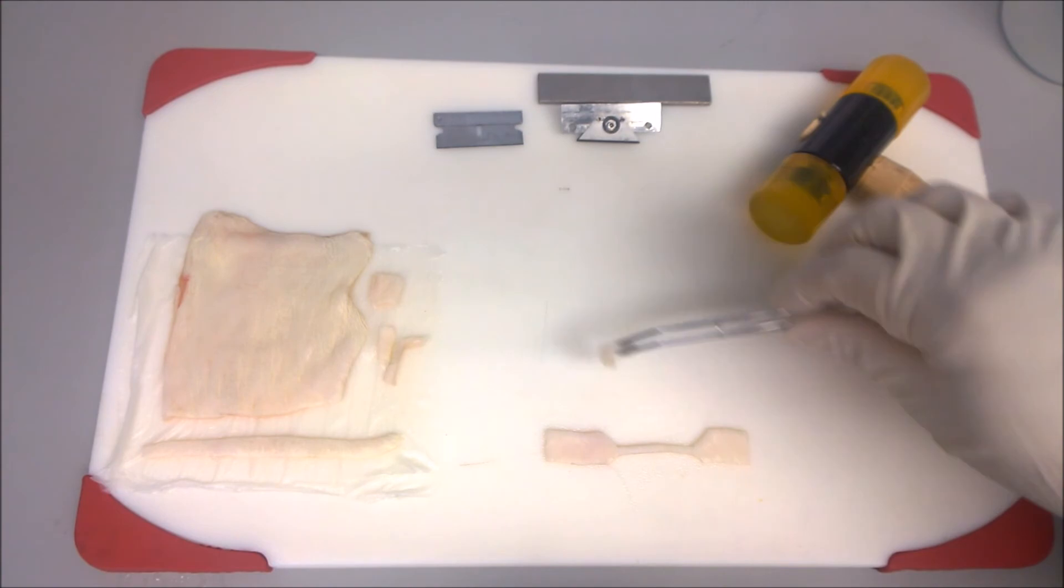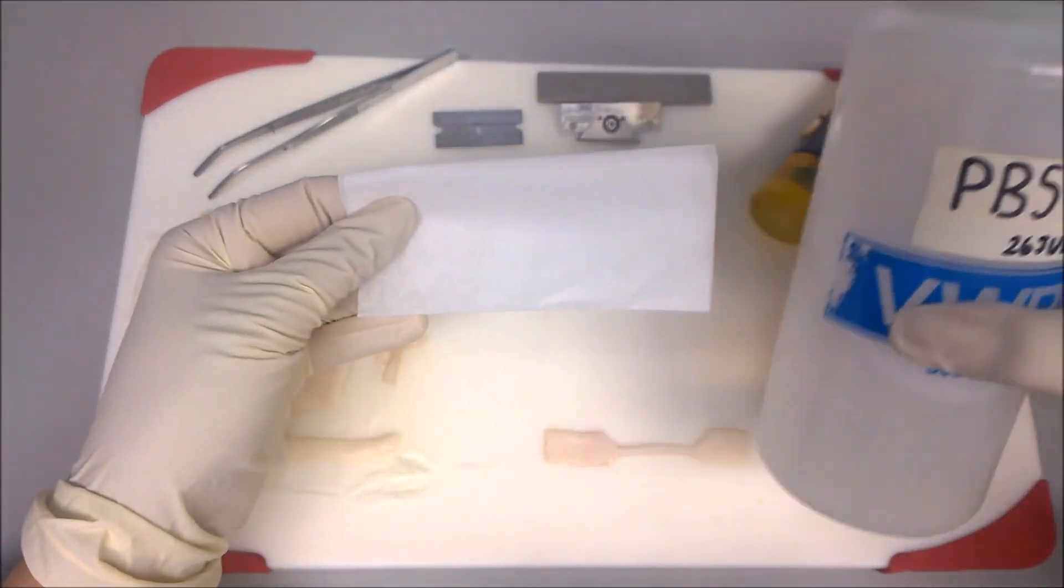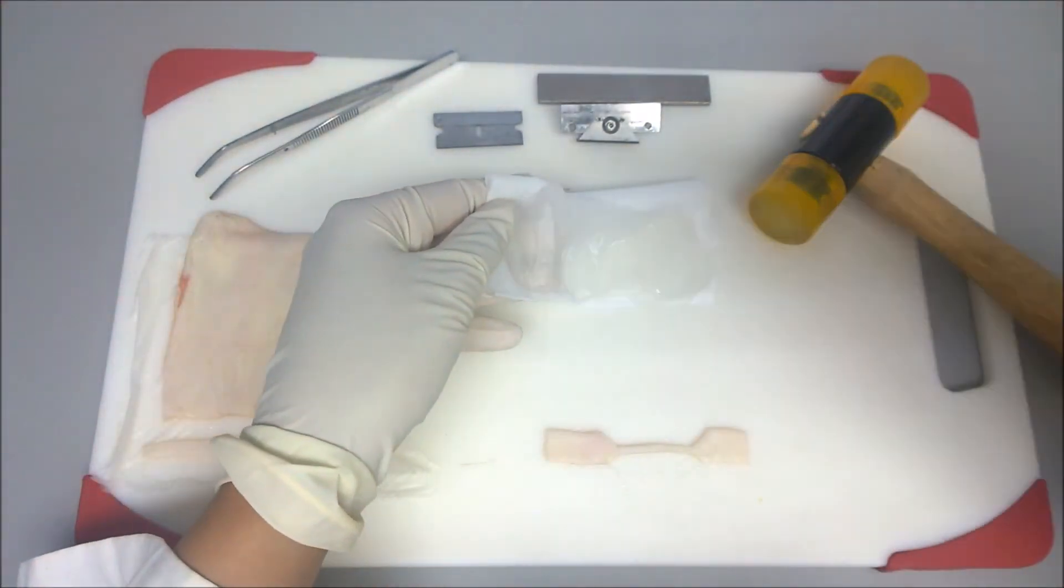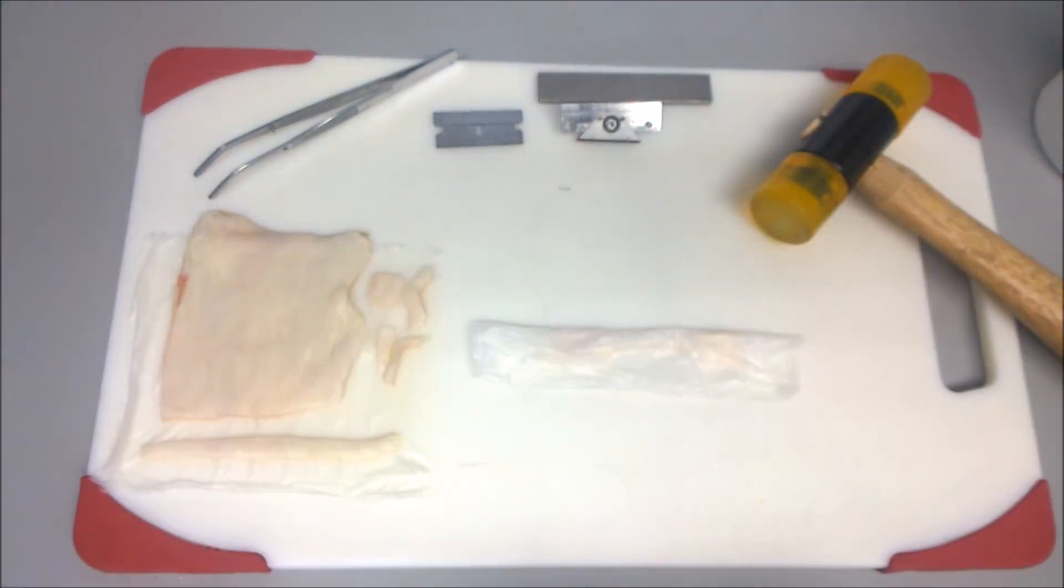Now that you have your dog bone shaped skin sample, place it in a delicate task wipe soaked in PBS to preserve the moisture until testing.